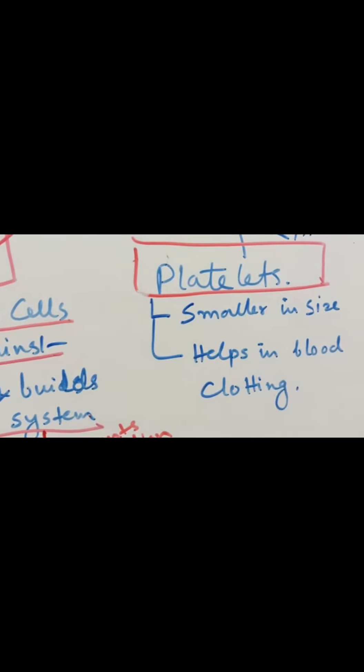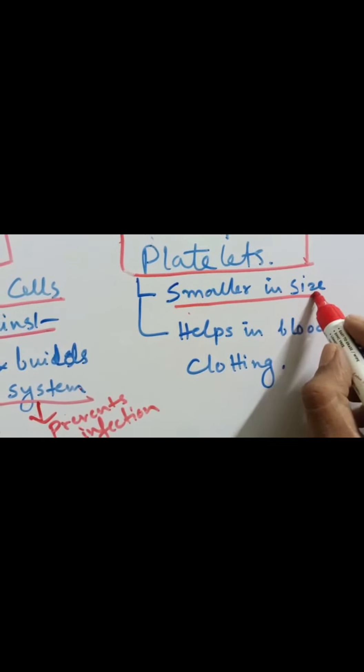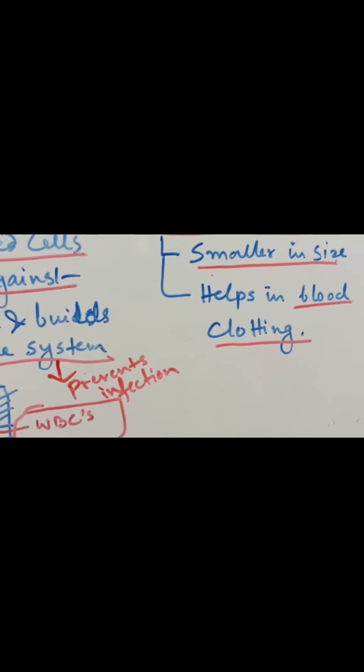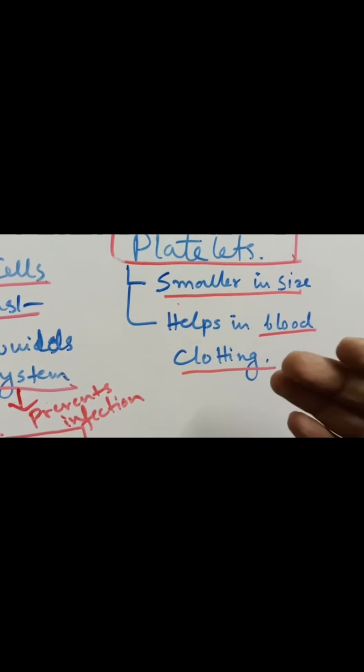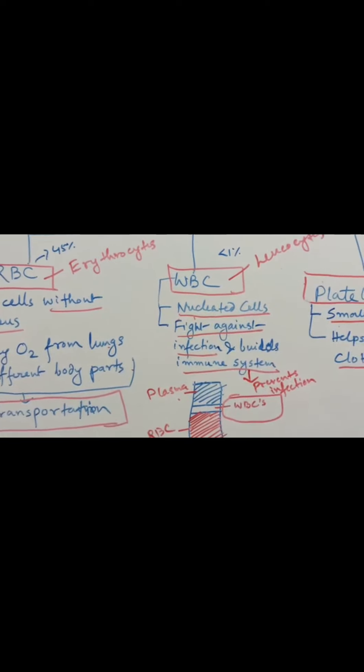Lastly, we will discuss briefly about the platelets. Platelets are smaller in size. The main function of platelets is blood clotting, similar to the protein fibrinogen. So in this video, I have described blood, the composition of blood, and the types of blood cells. If you like this video, do share and subscribe to my YouTube channel. Thank you so much.